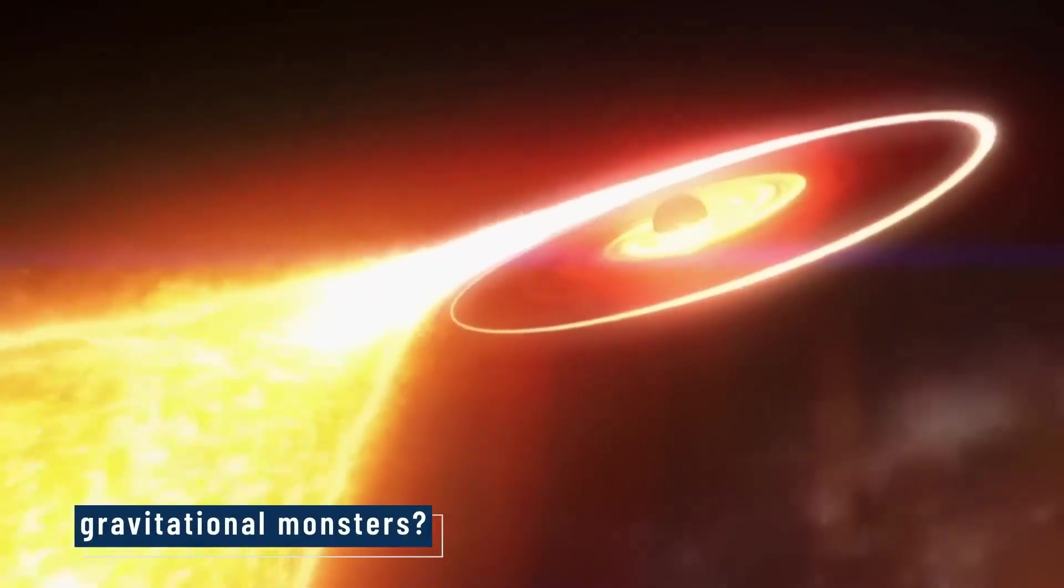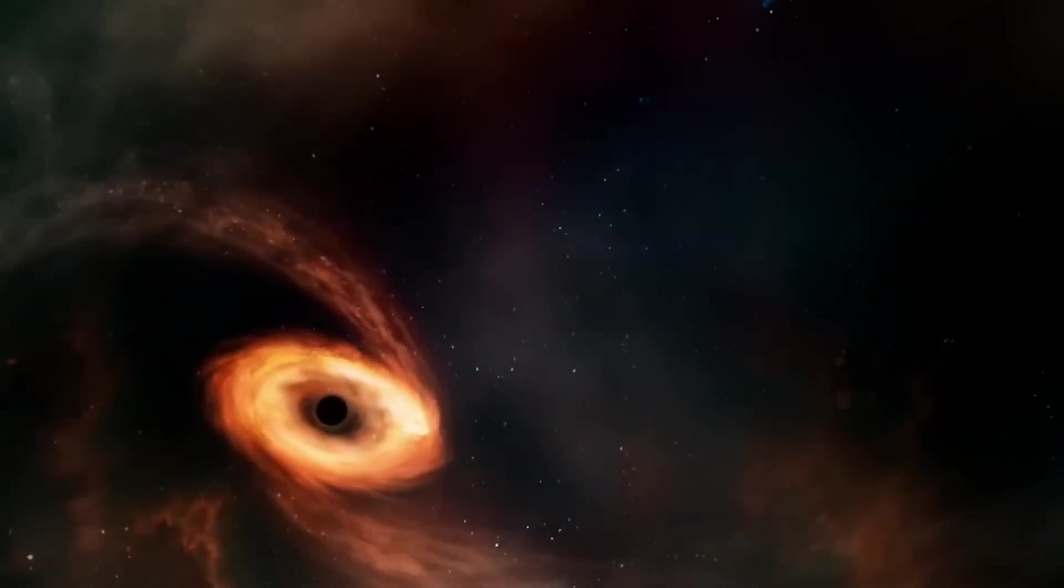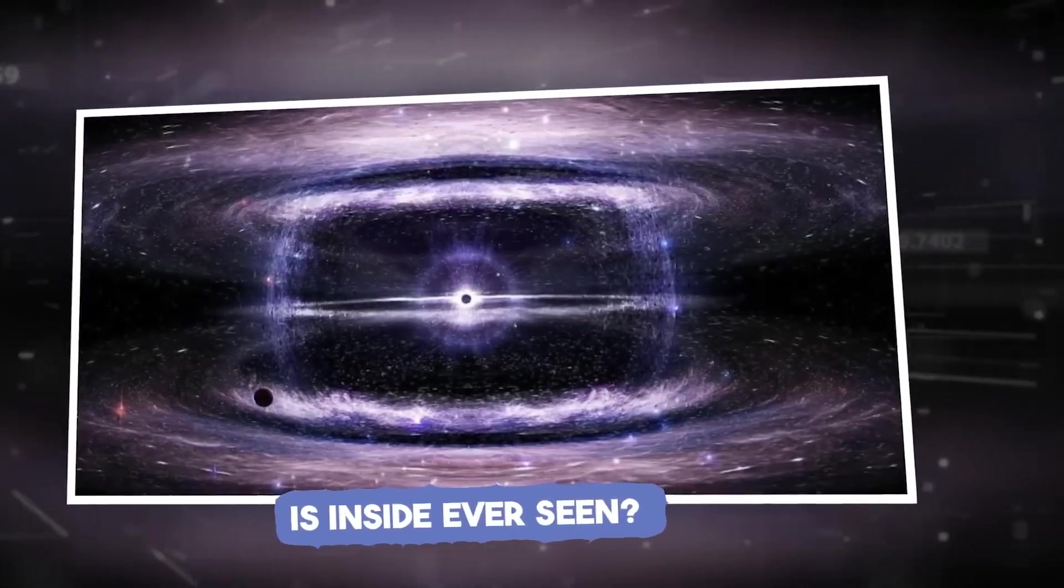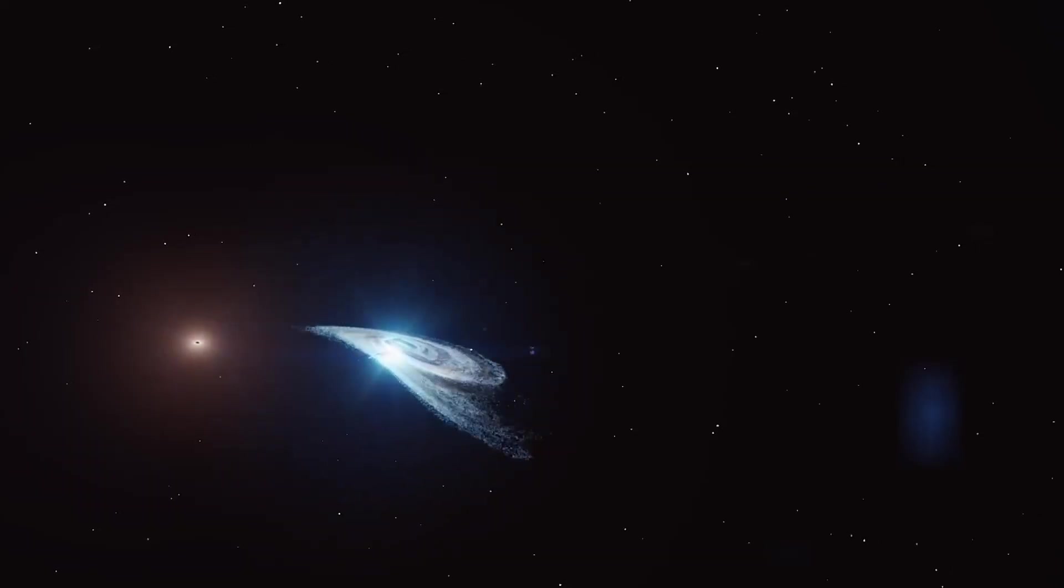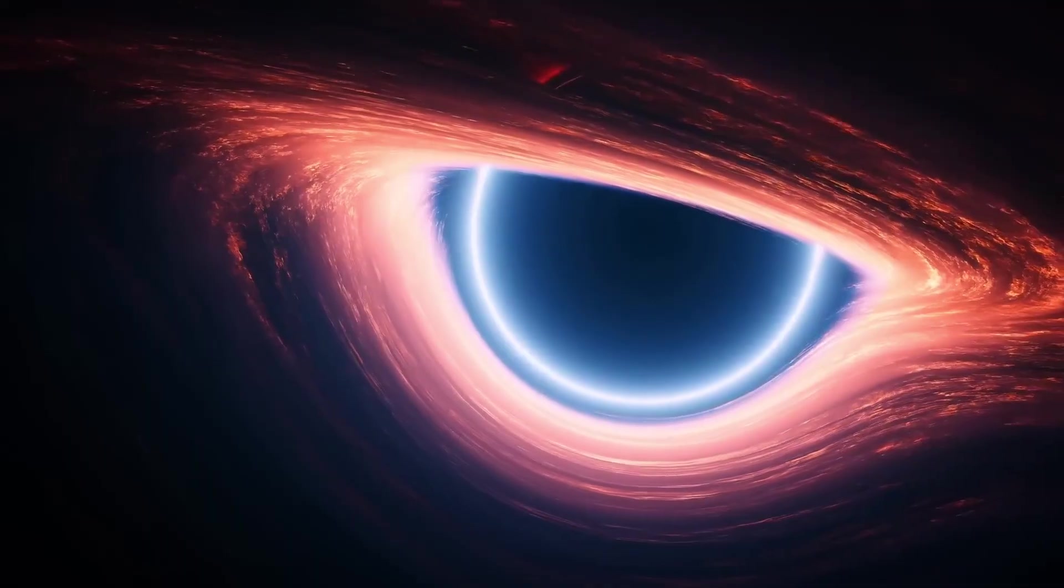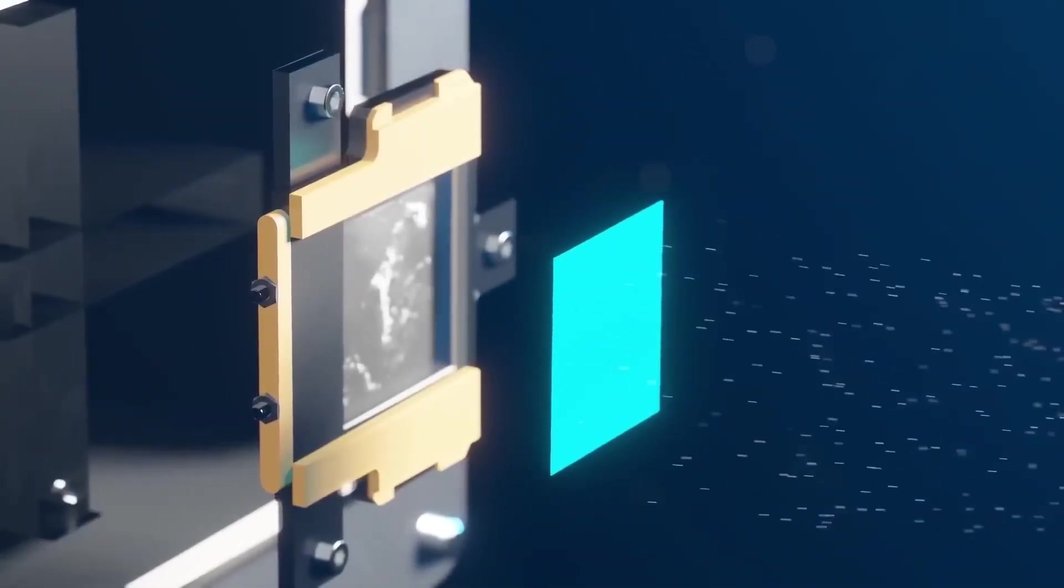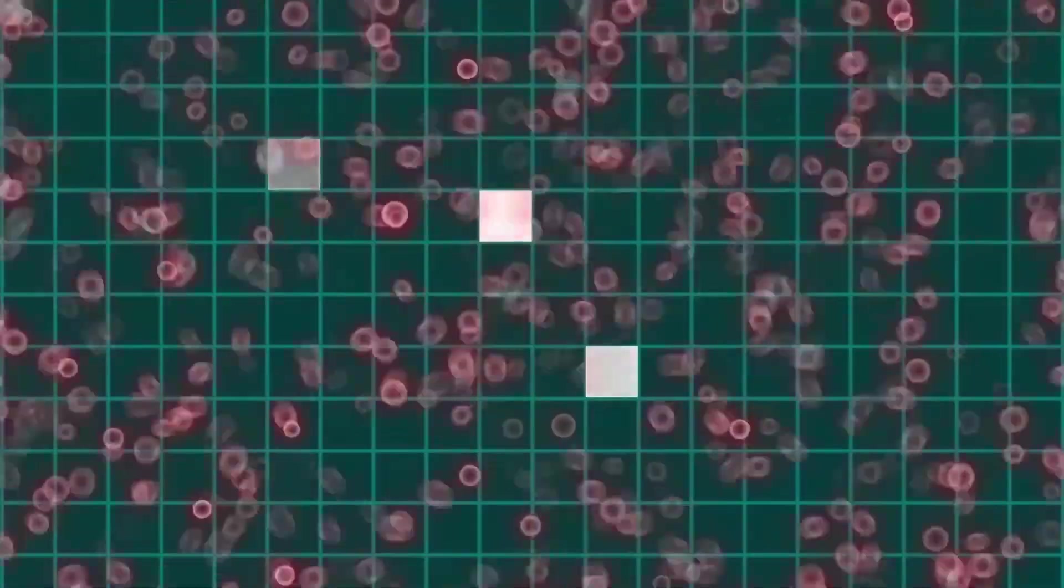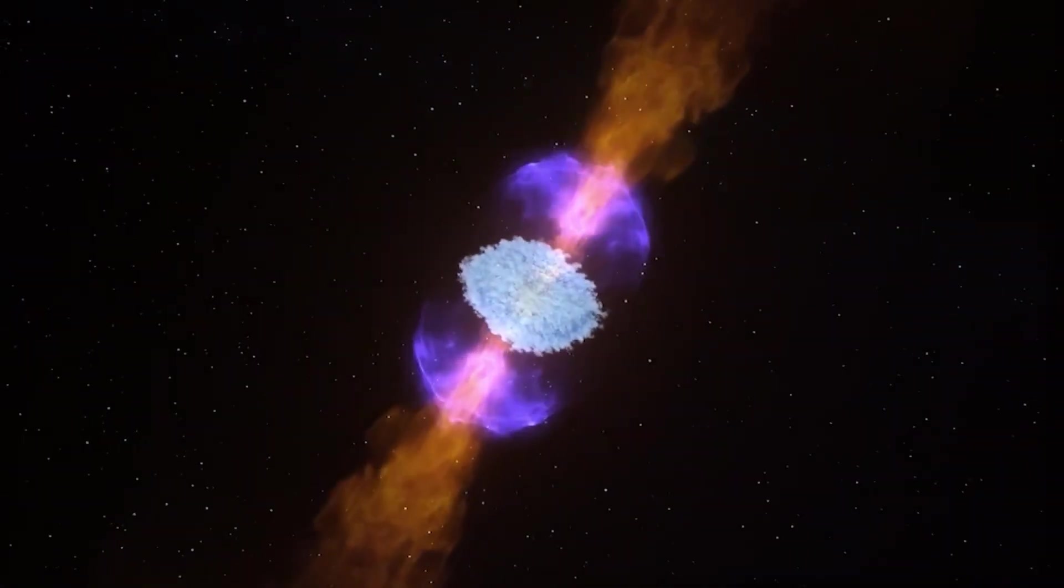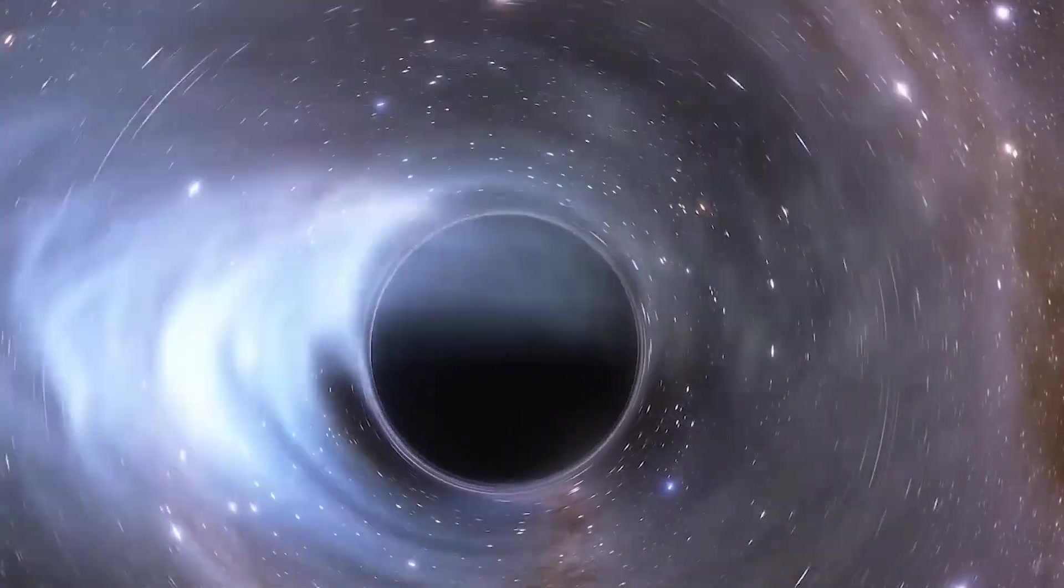Instead of consuming galaxies whole, black holes primarily act as regulators. When they feed on surrounding gas, they emit enormous amounts of energy back out into their environment. This powerful outflow, often taking the form of highly focused jets or intense winds, can prevent nearby gas from cooling down and collapsing to form new stars. It functions like a cosmic thermostat, keeping galaxies from overheating or forming stars too quickly. This important effect, known as AGN feedback, actively shapes how galaxies evolve and grow. As one scientist aptly said, black holes don't destroy galaxies. They sculpt them.